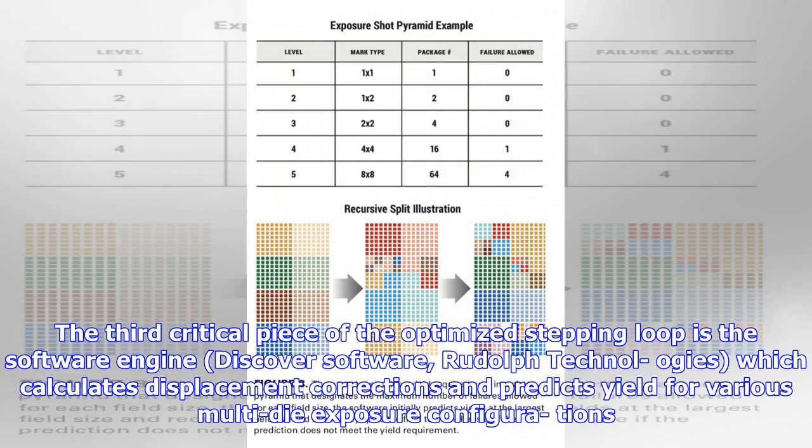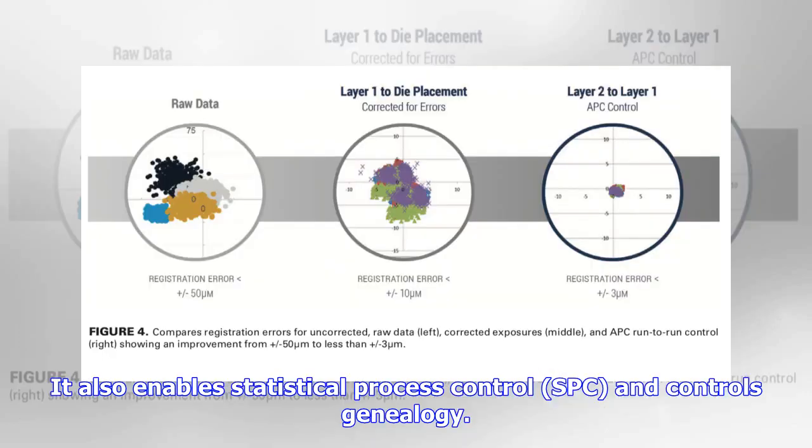The third critical piece of the optimized stepping loop is the software engine, Discover Software, Rudolph Technologies, which calculates displacement corrections and predicts yield for various multi-die exposure configurations. It also enables statistical process control, SPC, and controls genealogy.